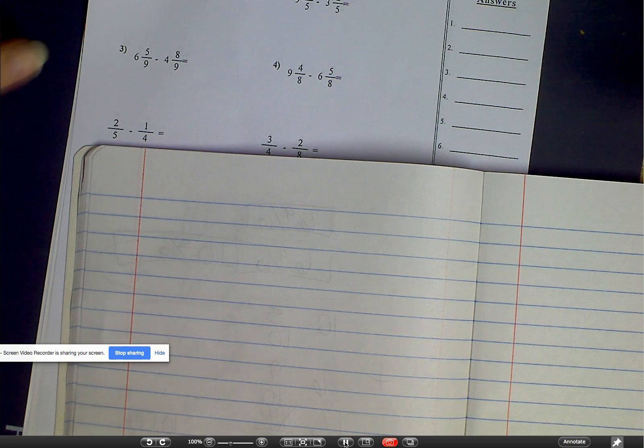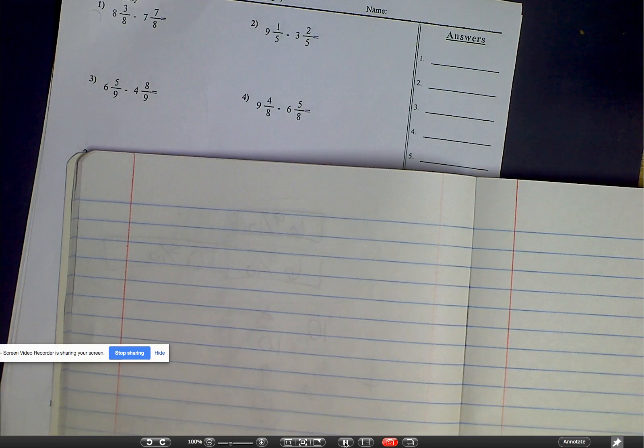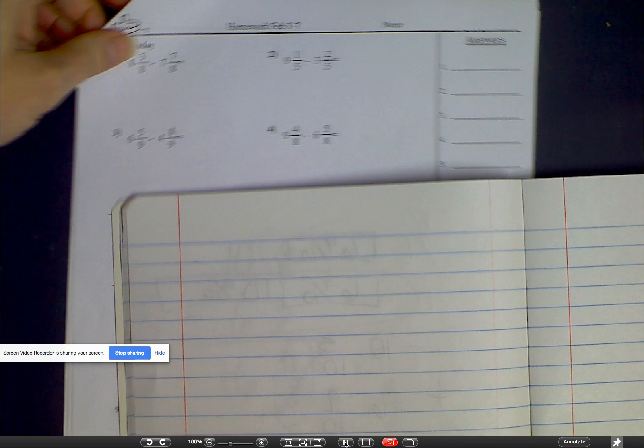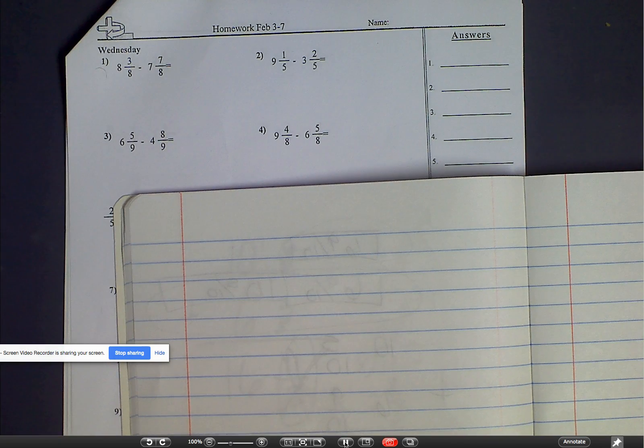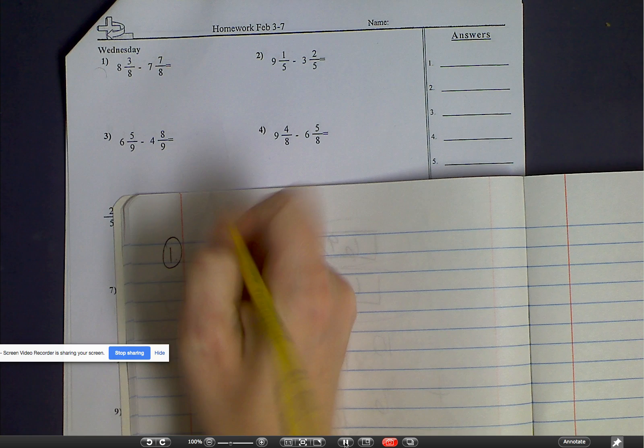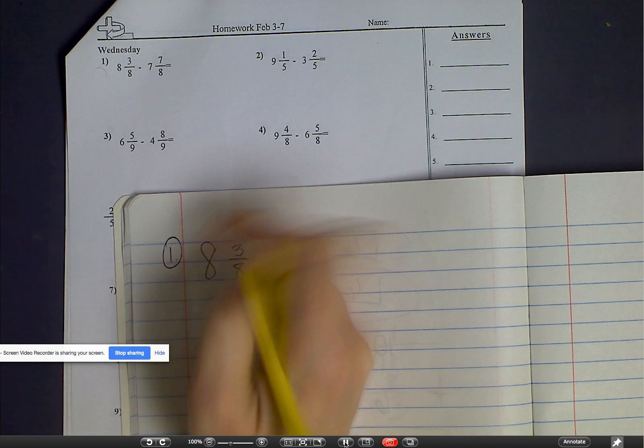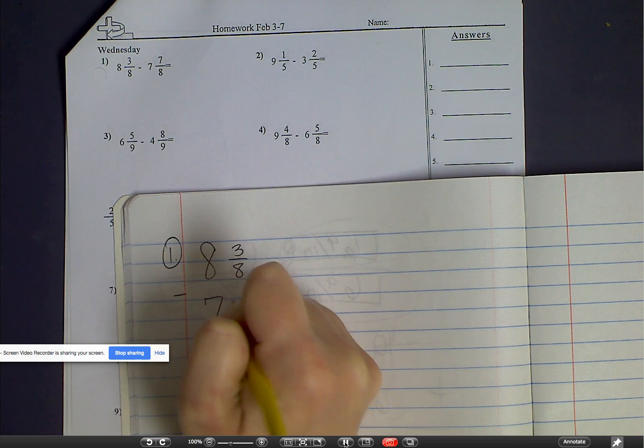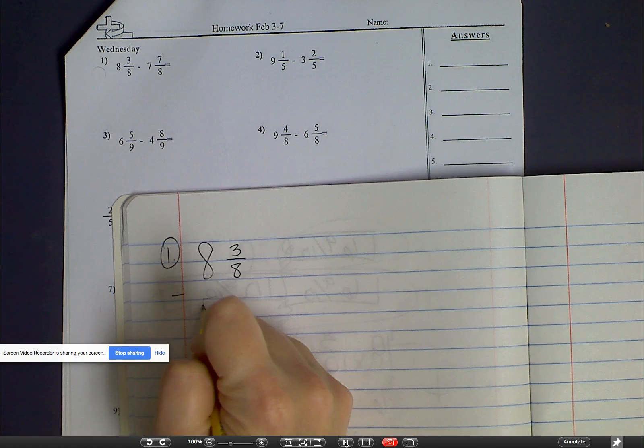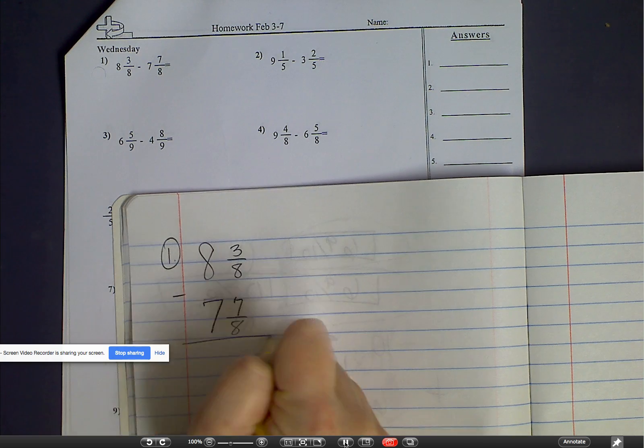So we're working on the odd problems today. So we have the first one, number one, is eight and three-eighths minus seven and seven-eighths.